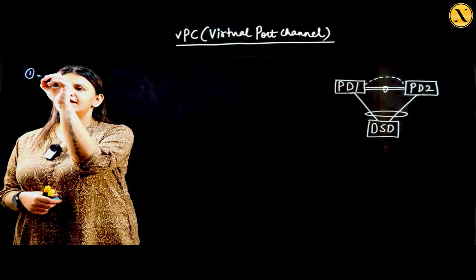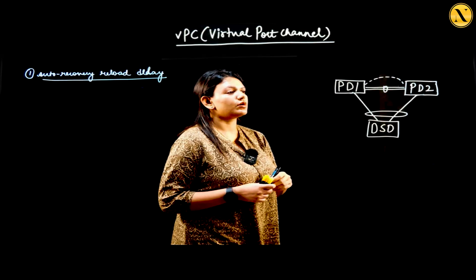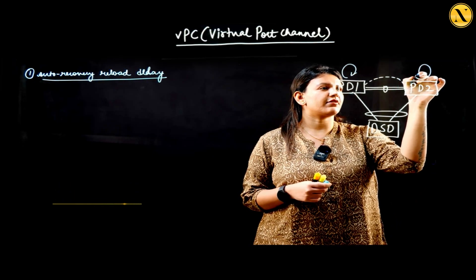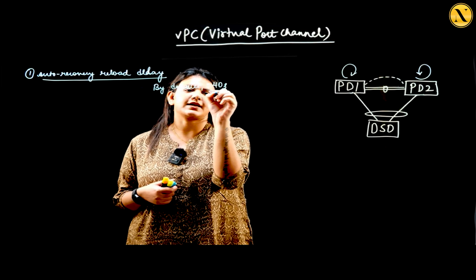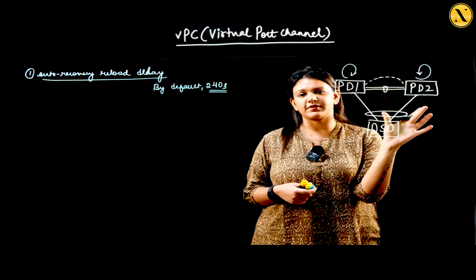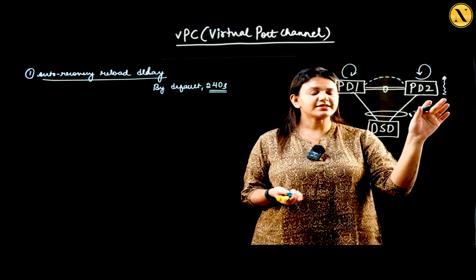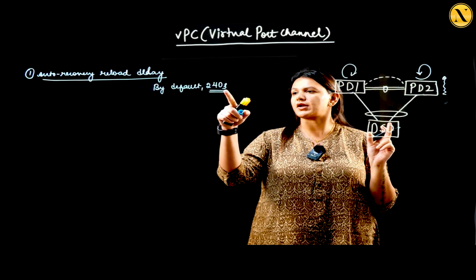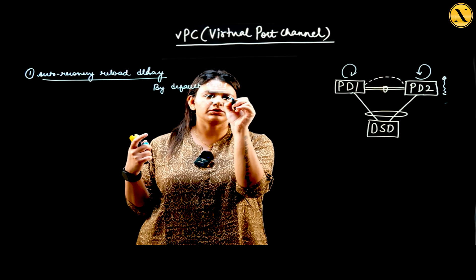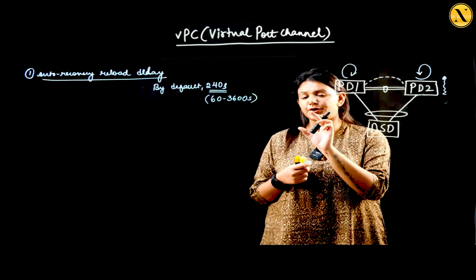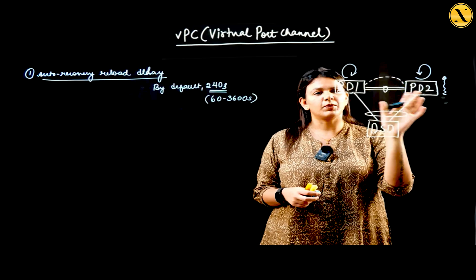The first feature we're going to discuss is auto recovery reload delay. What is auto recovery reload delay? Let's assume both my peer devices have been reloaded. There is a certain delay timer that you will be configuring — by default 240 seconds. Let's assume both peer devices have been reloaded and one of the peer devices comes up first. Once this device comes up, it waits for a certain period of time — by default 240 seconds, but configurable between 60 to 3600 seconds.